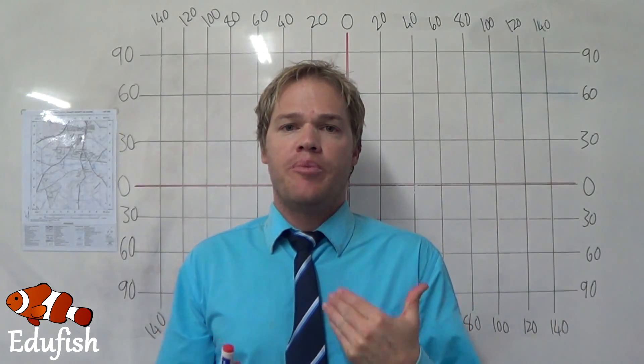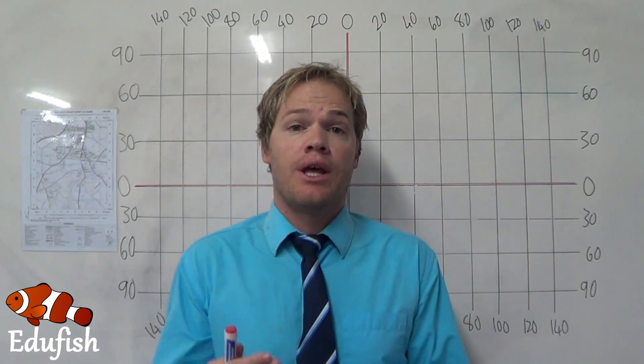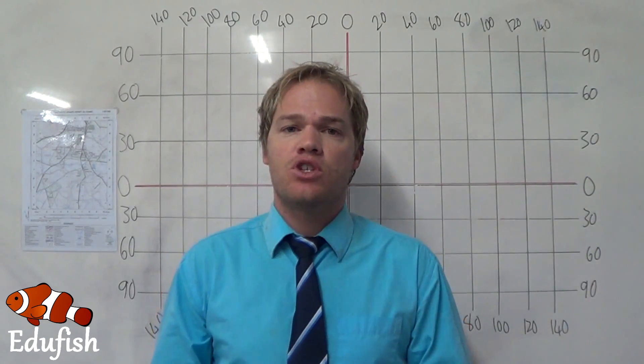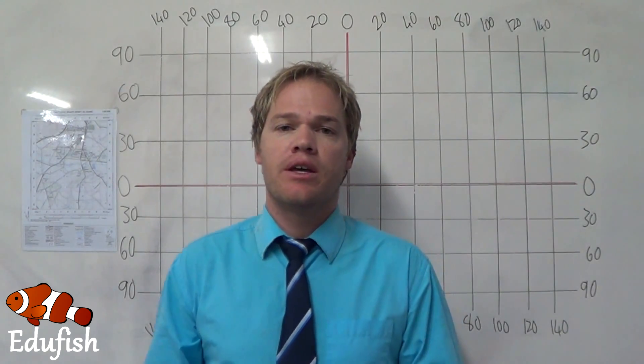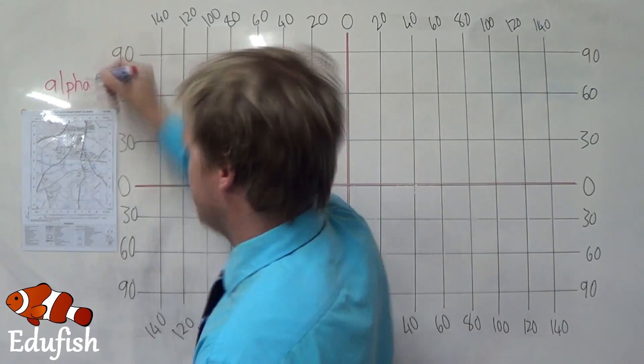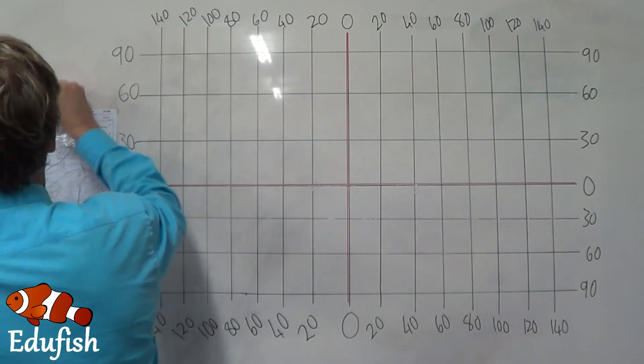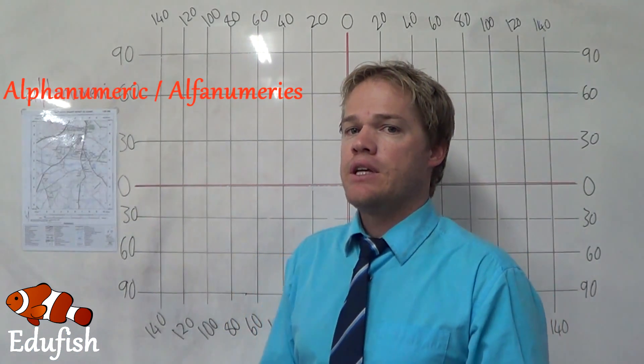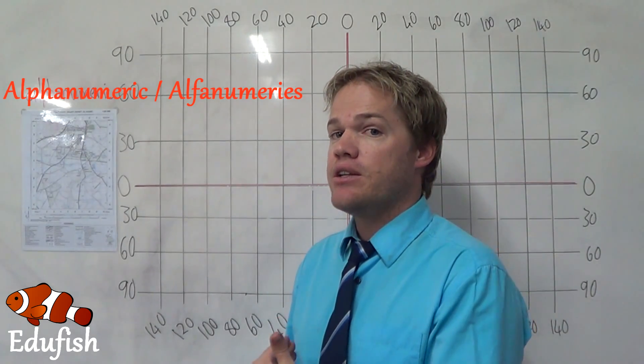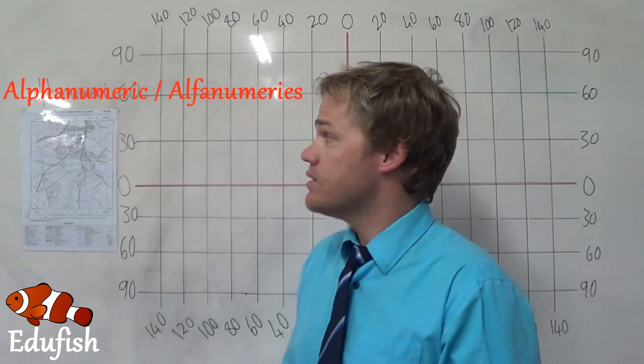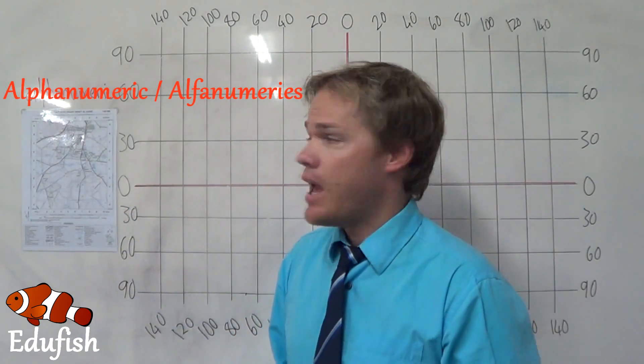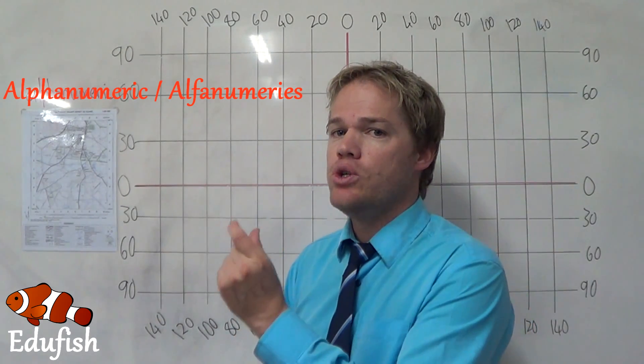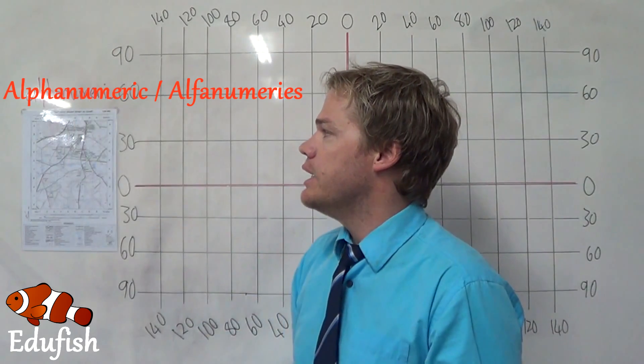Now, when we work with certain places and certain locations on a map, there's two kinds of references we can use. The first one I'm going to talk about is the alphanumeric reference. Alphanumeric says that it refers to something using characters both from the alphabet, alpha, in other words letters, as well as numbers. So first of all, we're going to have one or two letters, and then we are going to have one or two numbers.